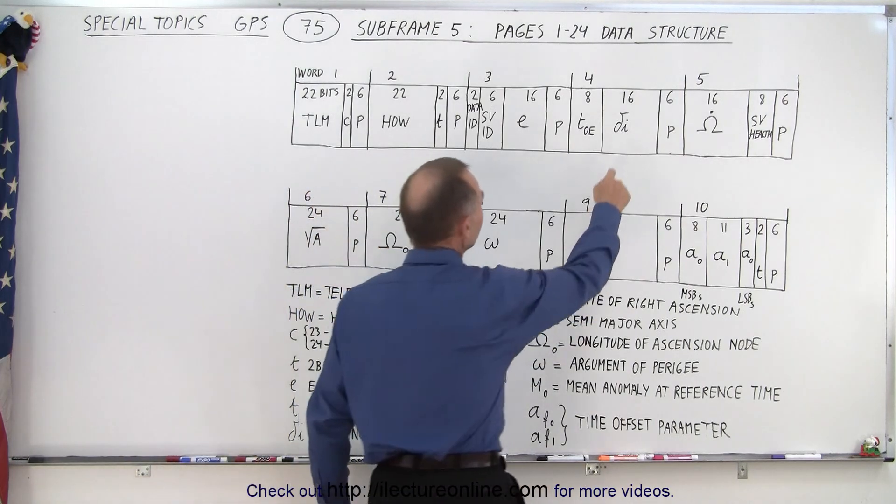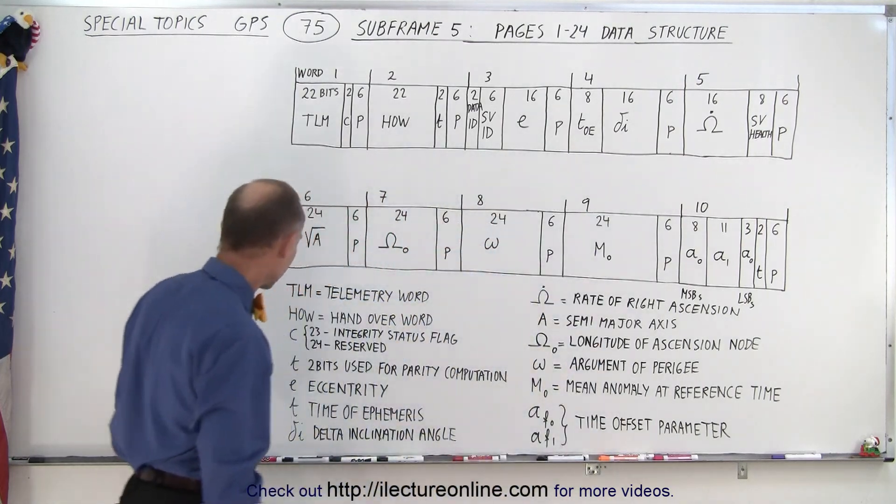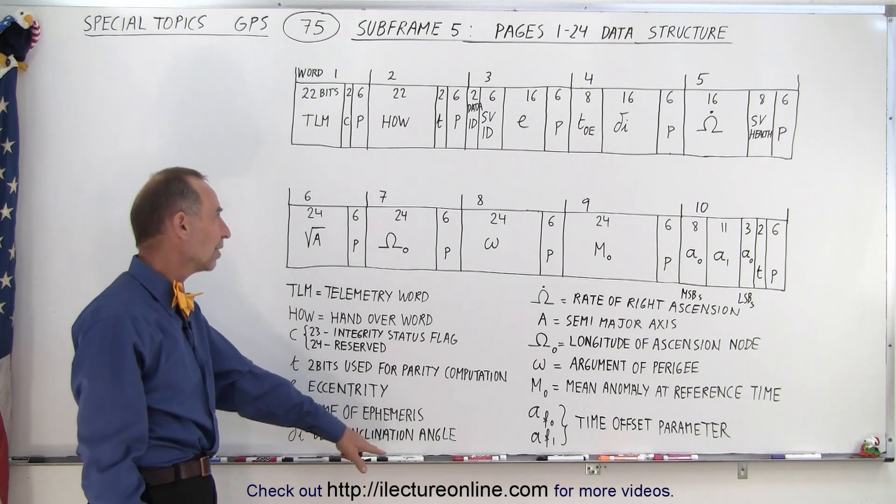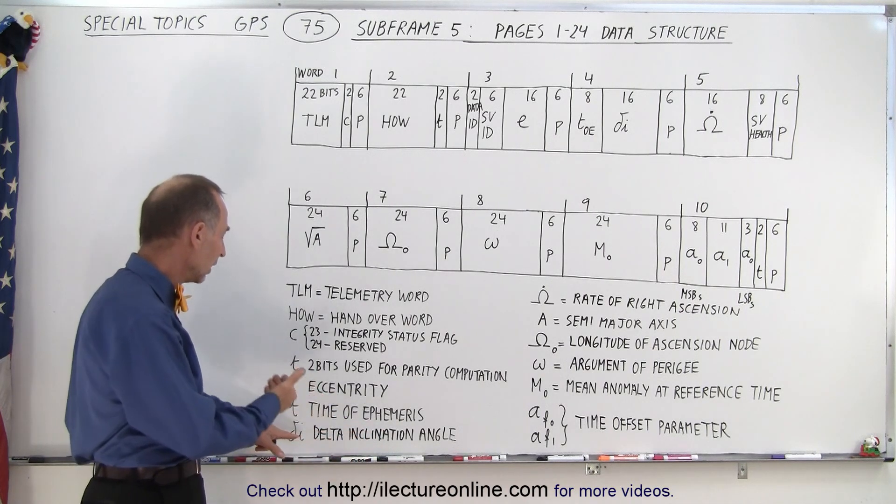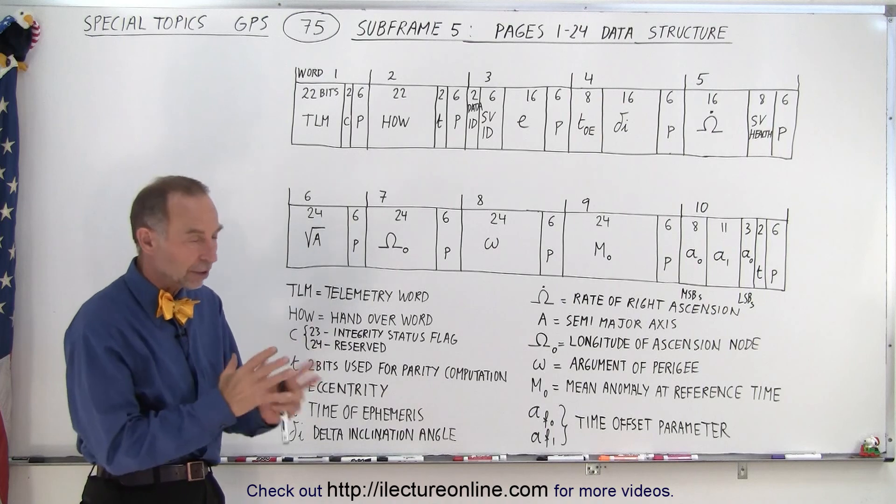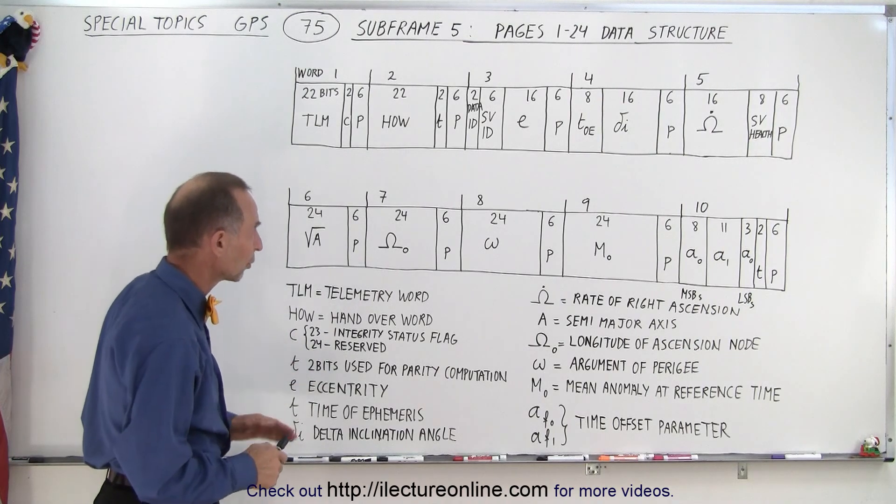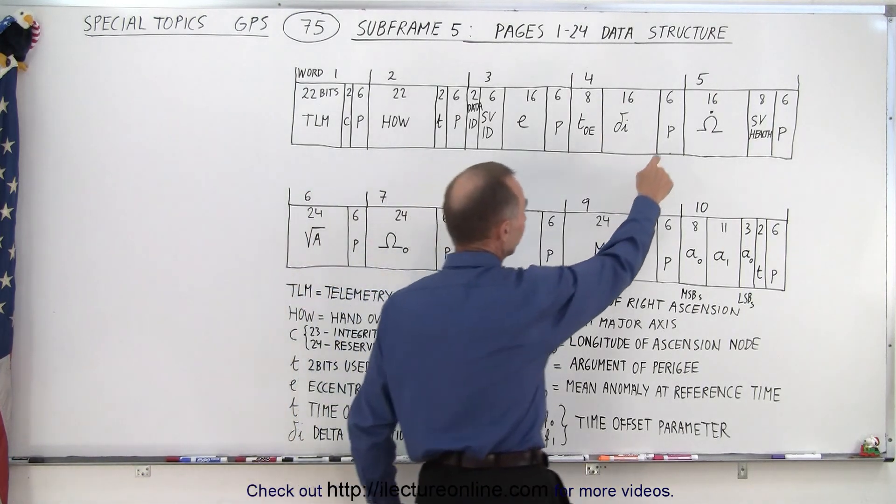The next one is delta sub i. Now delta sub i is associated with i. It's called the delta inclination angle. Well i is the inclination angle. This is the delta inclination angle so there's a reference to that and we'll show you how that's used. Again the six parity bits.